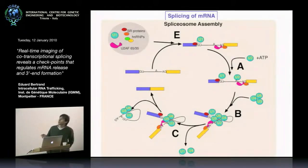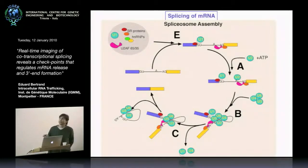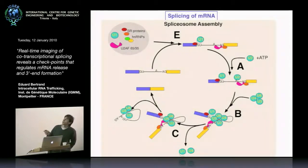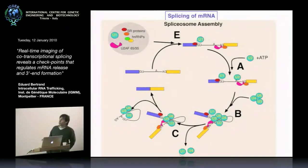This reaction is carried out by the spliceosome, which has to be assembled on every mRNA at each splicing round. It's composed of five snRNPs at the heart of the spliceosome and about 100 proteins. You start assembling by having U1 recognize the splice donor, U2AF recognize the splice acceptor sites, then load U2 on the pre-mRNA in an ATP-dependent manner, recruit the U4/U5/U6 complex to make the B complex, activate it by losing U1 and U4, then carry the first chemical step, remodel the spliceosome, and carry the second step. This is a very complicated reaction involving a large number of molecules.